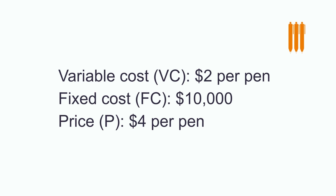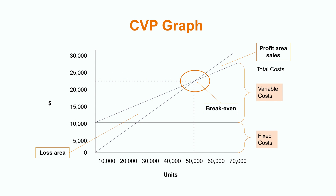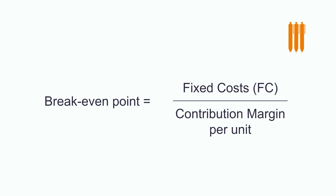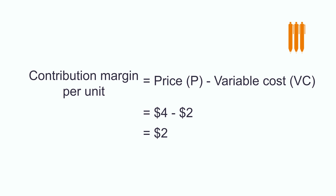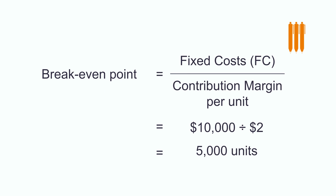How many pens do you have to sell per month to at least cover your cost? You must determine the break-even point. The break-even point is where a business is at least able to cover its costs. The formula is: fixed cost divided by contribution margin per unit. You take the price per pen of $4 and subtract the variable cost per pen of $2, leaving you with a contribution margin of $2 per unit.